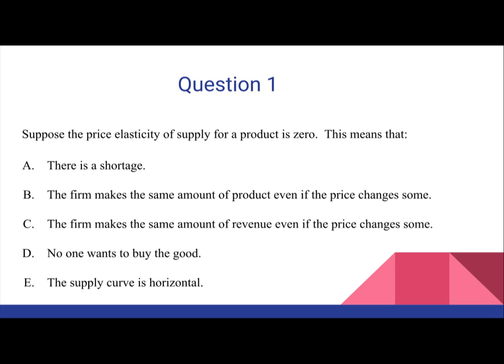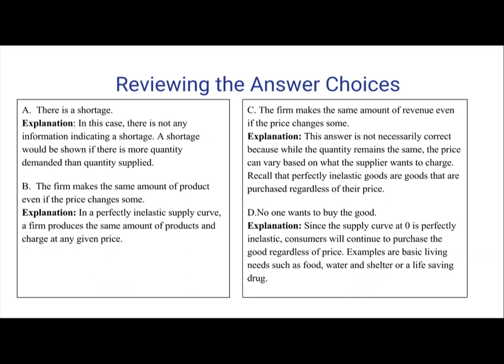Now we're going to take a look at the answer choices and the explanations for those answer choices. Answer A: there is a shortage. In this case, there is not any information indicating a shortage. A shortage would be shown if there was information about the quantity demanded being greater than the quantity supplied. So this answer is incorrect.